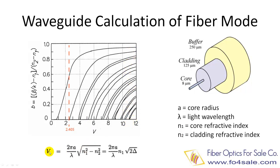V number is calculated based on the fiber's structure and the light wavelength, as shown at the bottom formula. In this formula, A is the radius of the fiber core, lambda is the light wavelength, N1 is the refractive index of the fiber core, and N2 is the refractive index of the fiber cladding. Buffer layer is there for mechanical protection of the fiber and is not involved in the calculation.